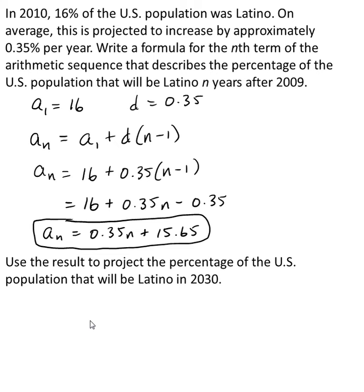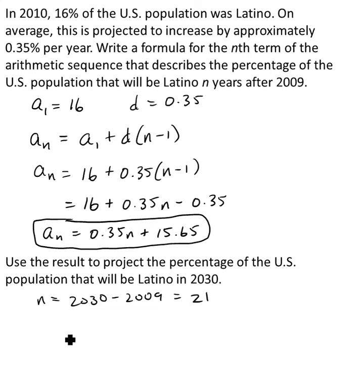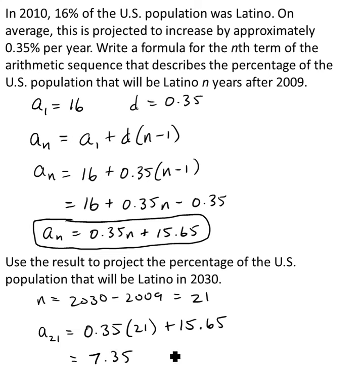Now we use this formula to project the percentage of the U.S. population that will be Latino in 2030. Since n represents the number of years after 2009, we calculate n as 2030 minus 2009, which equals 21. Substituting n equals 21: A21 equals 0.35 times 21 plus 15.65, which gives 7.35 plus 15.65, an even 23.